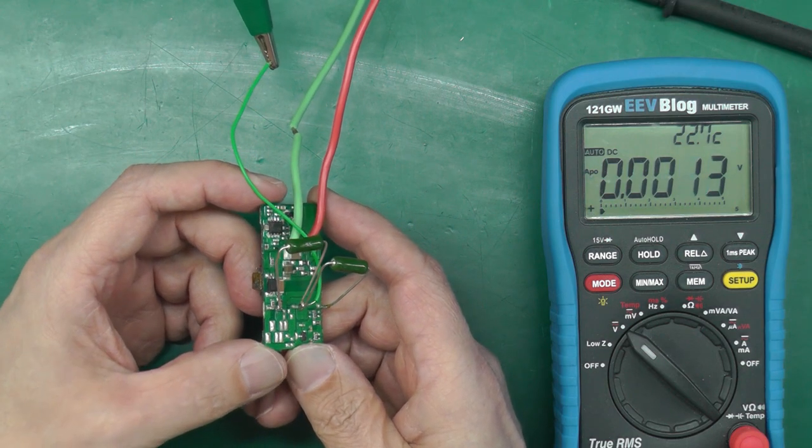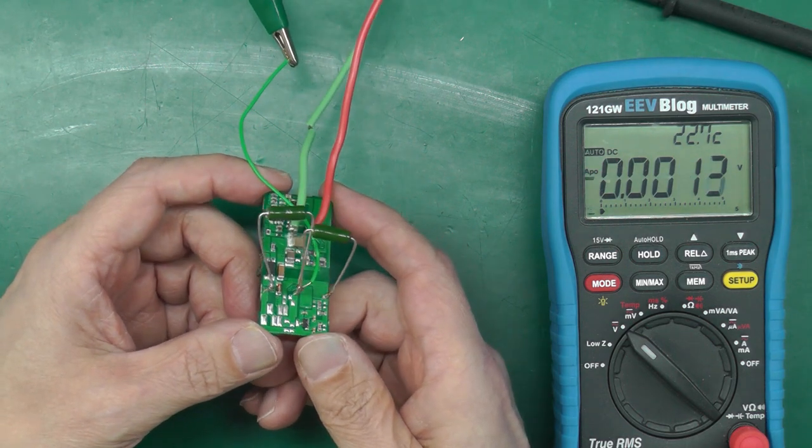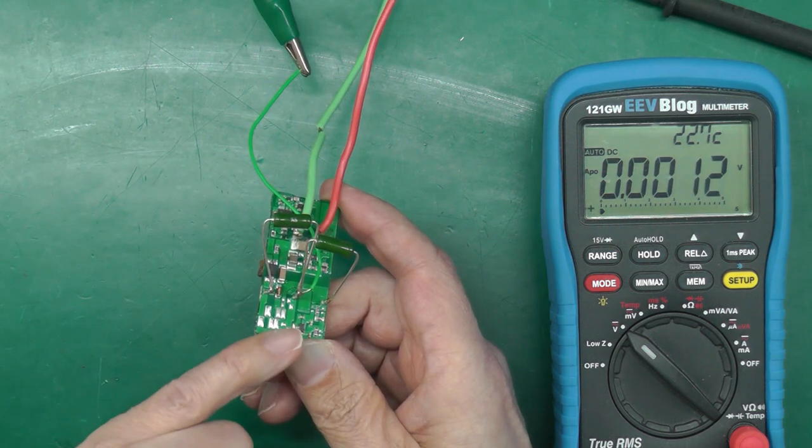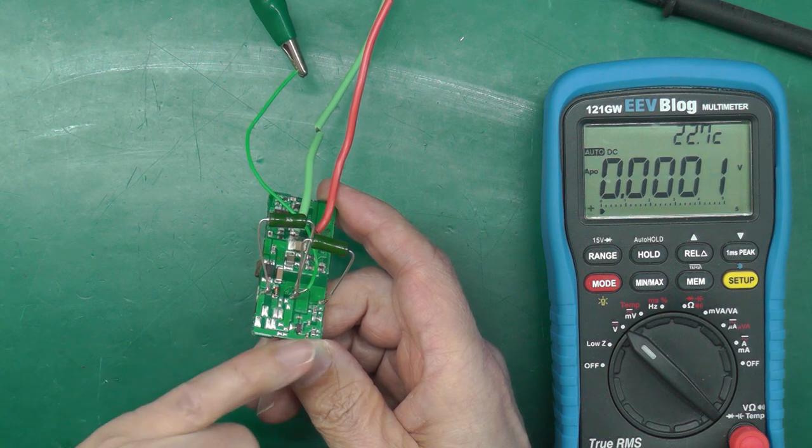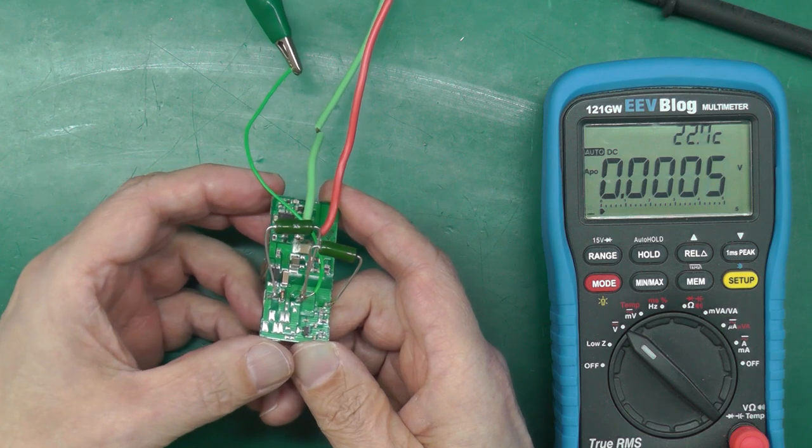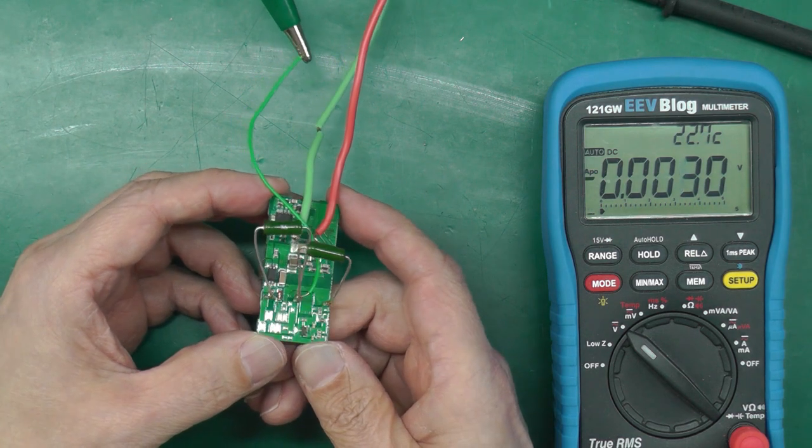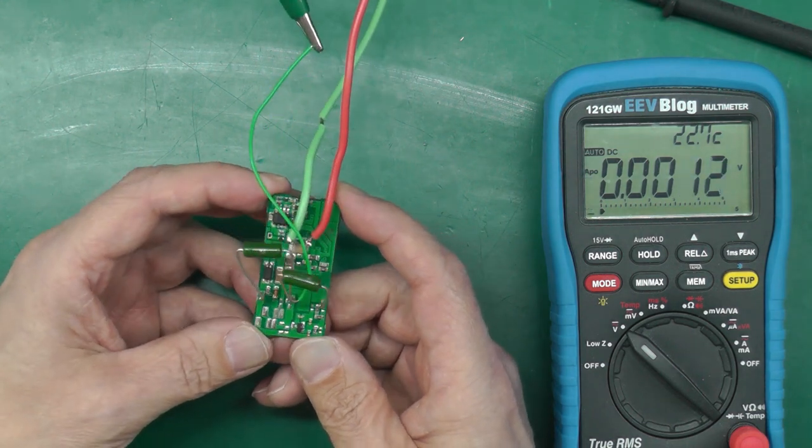I'm not using my DC electronic load because I really want to load up both rails at the same time with equal amounts of load, and I can't really do that on the one electronic load. So we're going to do it the old way.